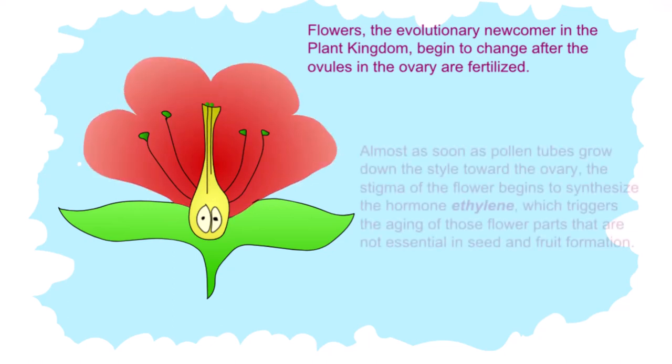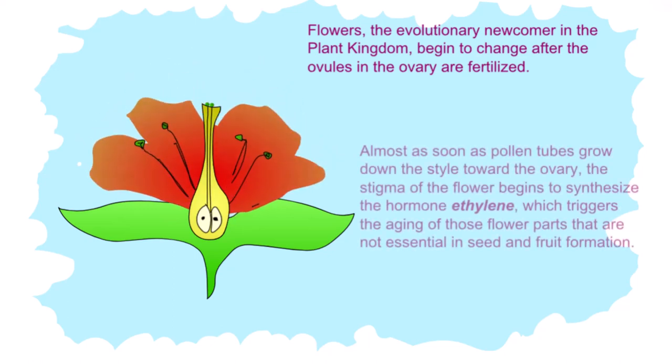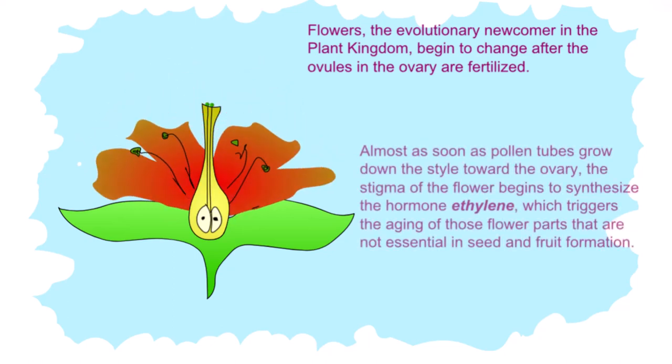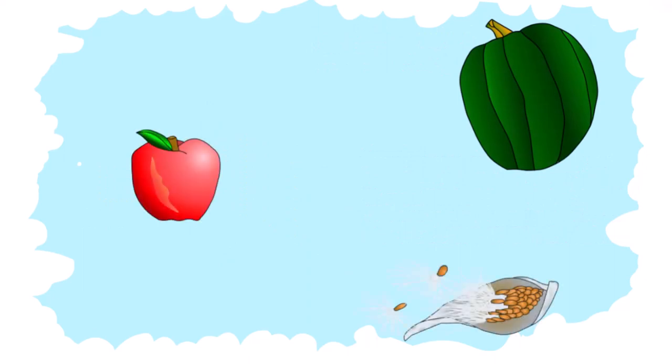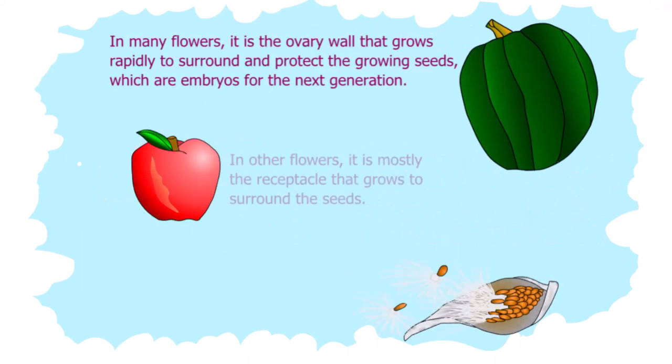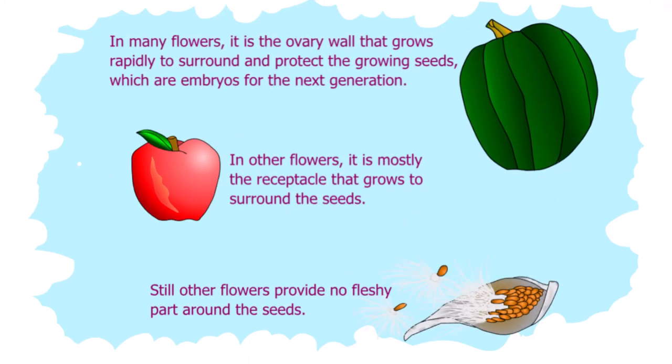Almost as soon as pollen tubes grow down the style towards the ovary, the stigma of the flower begins to synthesize the hormone ethylene, which triggers aging of flower parts not essential in seed and fruit formation. In many flowers, it is the ovary wall that grows rapidly to surround and protect the growing seeds — embryos for the next generation.